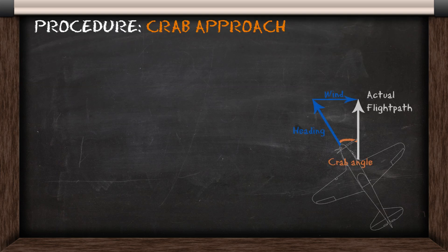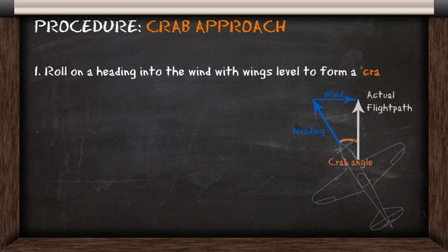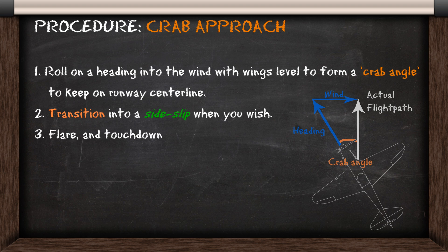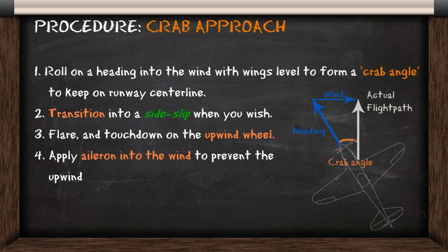Now let's look at the crab approach. To perform a crab you want to roll on a heading into the wind with the wings level, and this forms a crab angle that counters the wind drift and keeps you on runway centerline. You can transition into a side slip at any point during the final, but usually pilots will do the transition when they're ready to flare and touch down, and at that point it's the same as landing in a side slip approach.